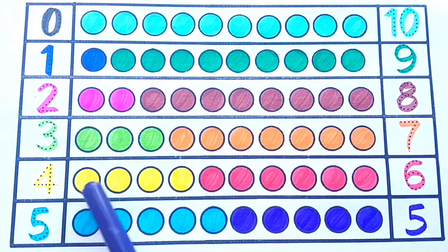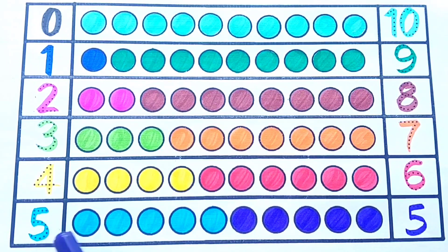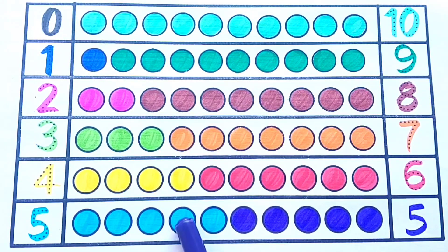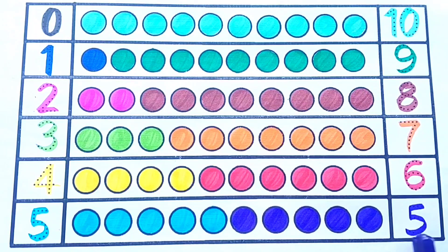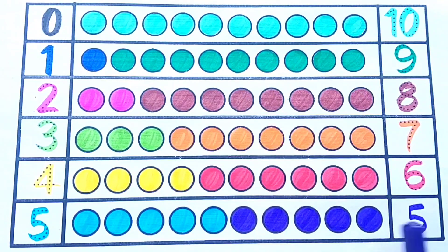1, 2, 3, 4, 5. 1, 2, 3, 4, 5. 1, 2, 3, 4, 5. 5 plus 5 is equals to 10.